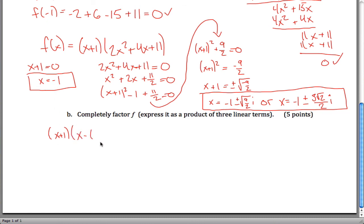x minus negative 1 plus the square root of 9 halves i, and x minus negative 1 minus the square root of 9 halves i.